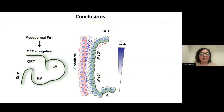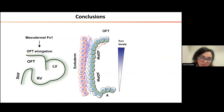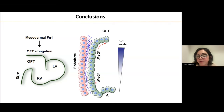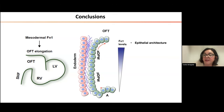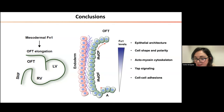In conclusion, we found that mesodermal fibronectin is required for outflow tract elongation. We found that there exists a gradient of fibronectin — more in the anterior second heart field than in the posterior — and that it is required for maintaining epithelial architecture, cell shape and polarity, actin cytoskeleton, YAP signaling, and cell-cell adhesion.